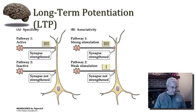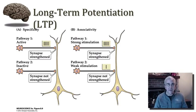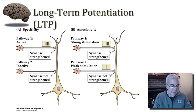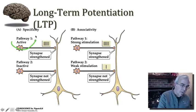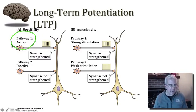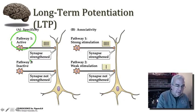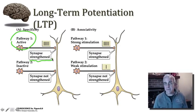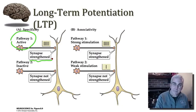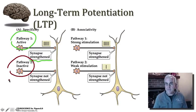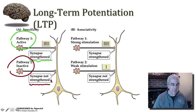The principle of specificity means that in order for a pathway to be potentiated, it must be active. So imagine a scenario where we have two pathways: one pathway is active and stimulated, and that synaptic connection is going to be strengthened with the application of a high-frequency burst of activity. Meanwhile, pathway 2, that was not active at the time that pathway 1 was active, its synapse is not going to be strengthened.